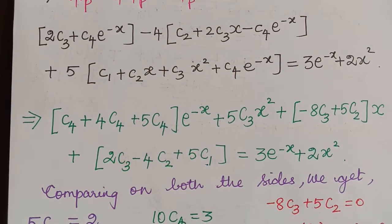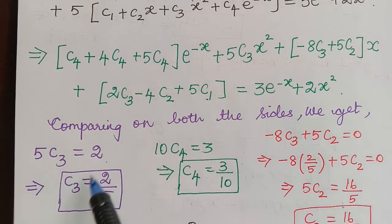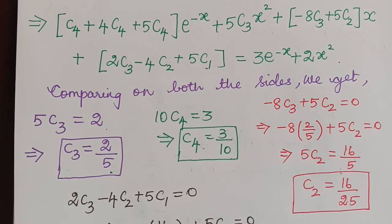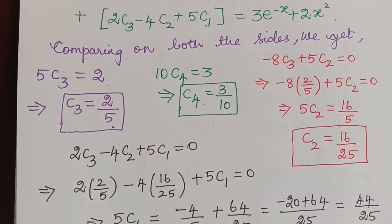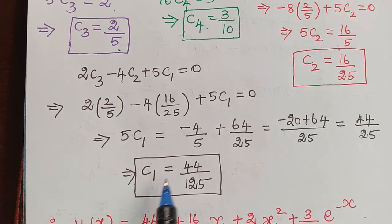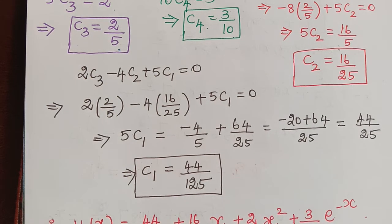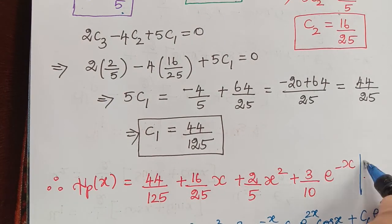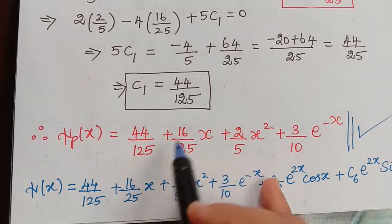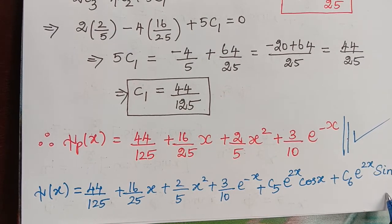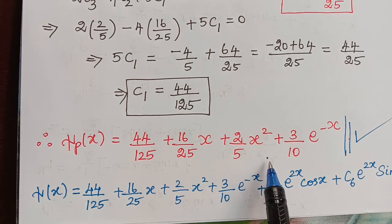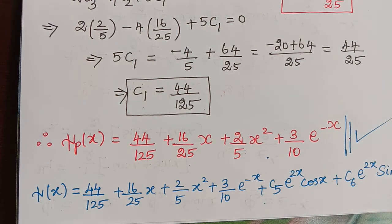Comparing both sides: c₃ = 2/5, c₄ = 3/10, c₂ = 16/25, and from the constant term c₁ = 44/125. Therefore the particular solution ξp(x) is obtained. The most general solution is also written. This is a very significant problem — copy it as an assignment. Two problems on the annihilator method have been assigned; kindly complete them. Thank you.